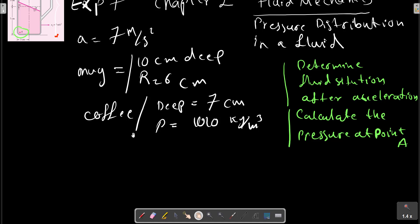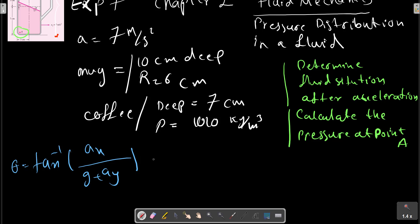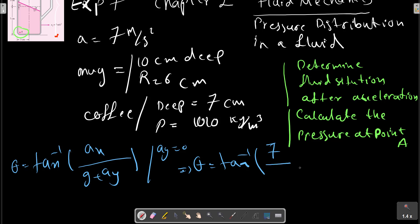In this portion we have the relation where ay equals zero. So theta equals ax over g, where ax is 7 m/s².